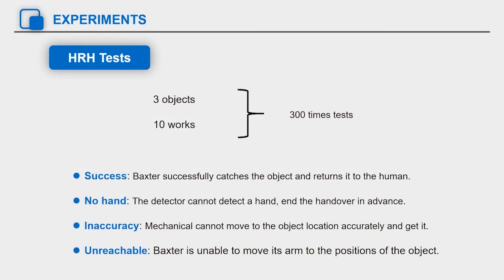For human robot handover tests, small objects are too small to grasp, so we only use large objects. 3 objects are placed on the workbench and 10 workers participated in tests. Each worker carried out 30 handover tests, a total of 300 times. The results of each test can be divided into the following four conditions.